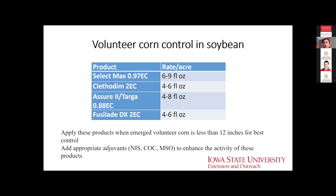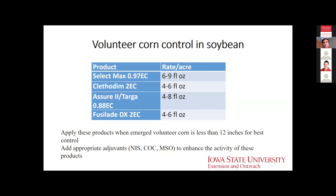Standard products for controlling volunteer corn in soybeans include Select Max (clethodim), Assure II, and Fusilade. Hitting volunteer corn when it is 12 inches or less in height is very important. Volunteer corn will likely come up in multiple flushes, so you must be proactive and ready to spray multiple times during the growing season — at least two applications. Adding adjuvants like non-ionic surfactant, crop oil, or MSO will help enhance activity, especially if the volunteer corn is more than a foot tall when you get to it.